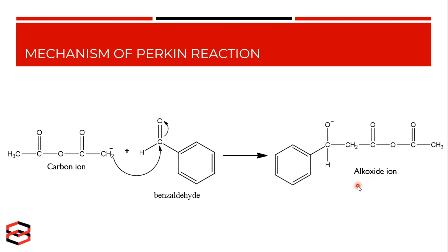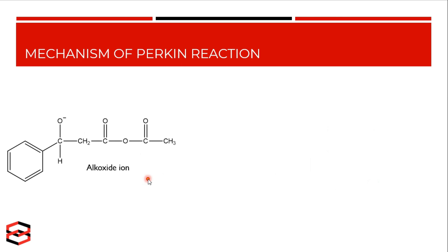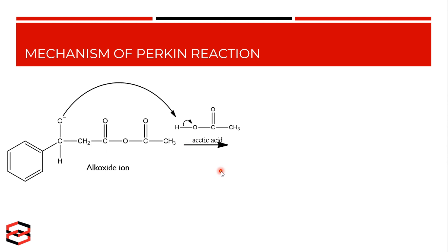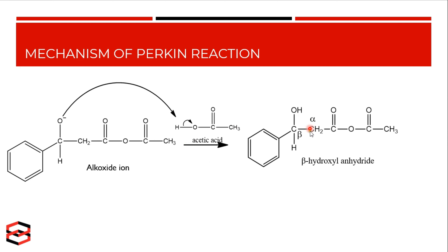This alkoxide ion abstracts a proton from acetic acid and produces beta-hydroxy anhydride. It is called beta-hydroxy anhydride because on the beta carbon a hydroxyl group is present.